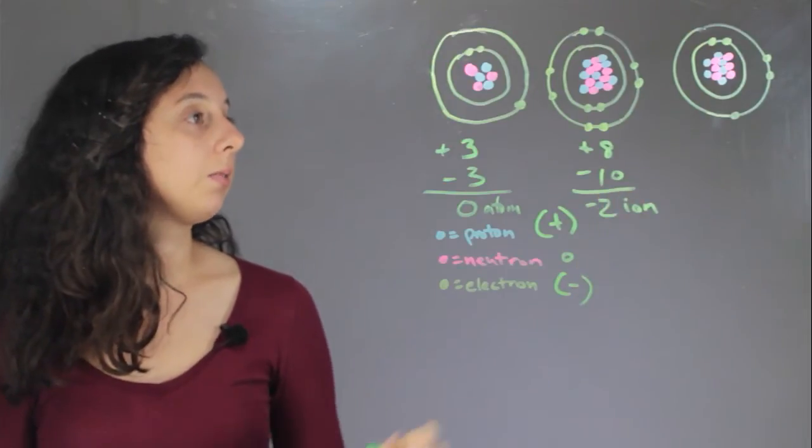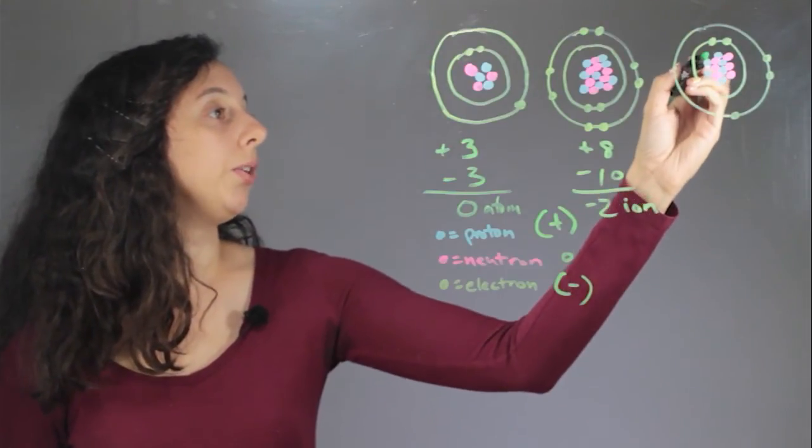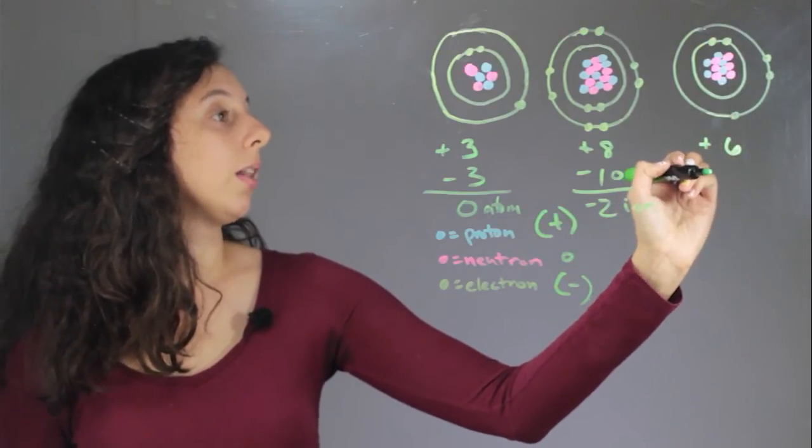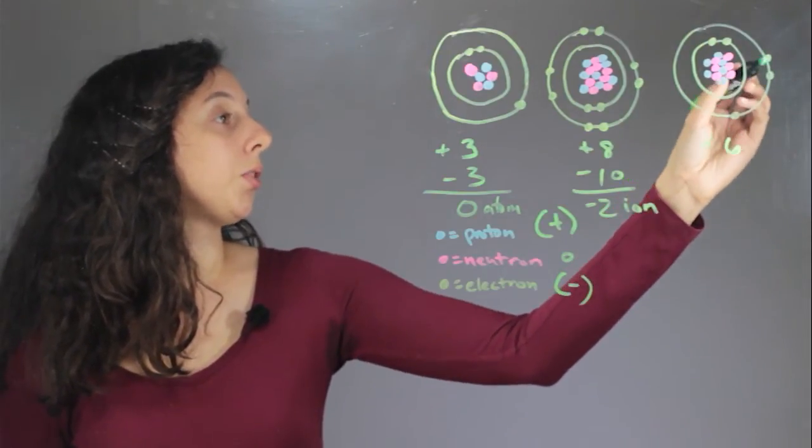And lastly let's see what's over here. Protons one, two, three, four, five, six. Electrons one, two, three, four, five.